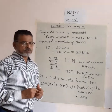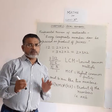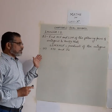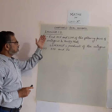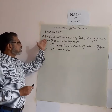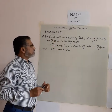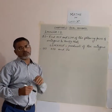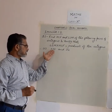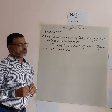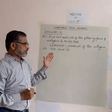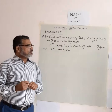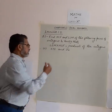Now we take some exercise questions to find the LCM and HCF. From Exercise 1.2, Question 2: find the HCF and LCM of the following pairs of integers and verify that LCM × HCF equals the product of the integers. The second part of the question gives us 510 and 92. First, we find the prime factors of these numbers.